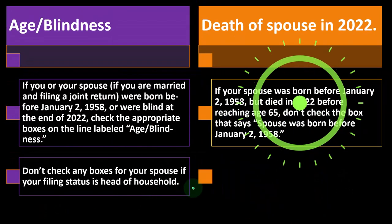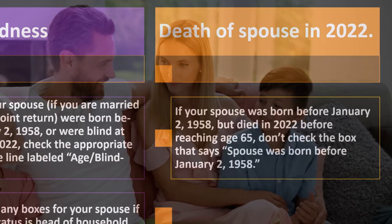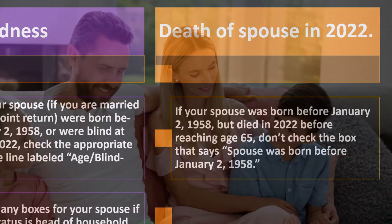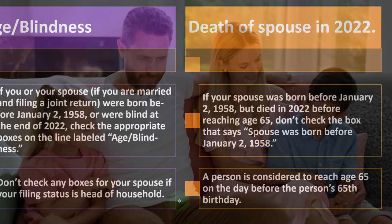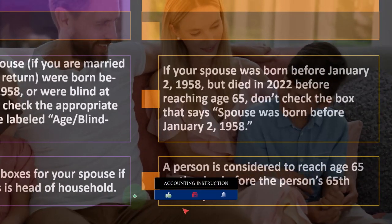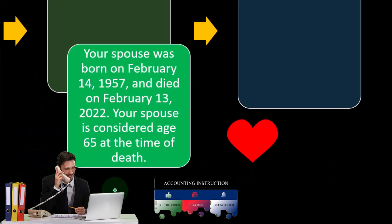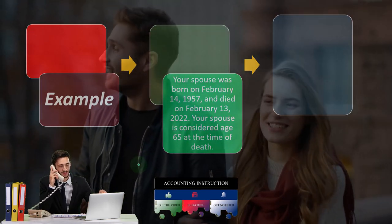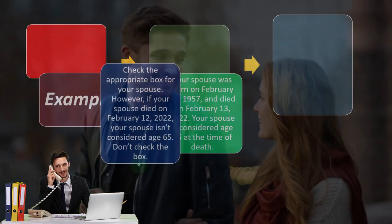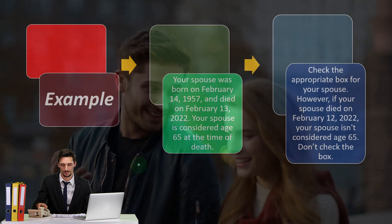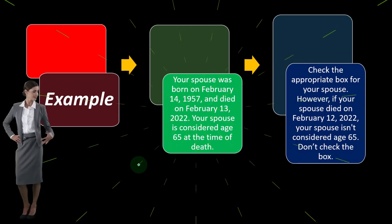Death of spouse in 2022: if your spouse was born before January 2nd, 1958, but died in 2022 before reaching age 65, don't check the box. A person is considered to reach age 65 on the day before their 65th birthday. For example, if your spouse was born on February 14th, 1957, and died on February 13th, 2022, they are considered age 65 at the time of death — check the appropriate box. However, if your spouse died on February 12th, 2022, they are not considered age 65, so don't check the box.